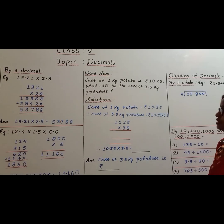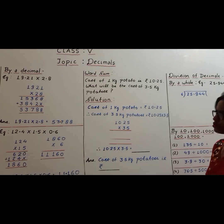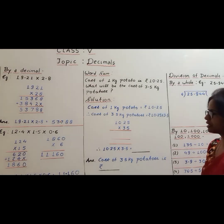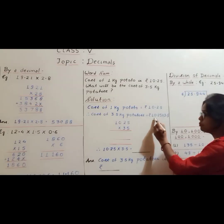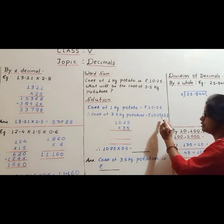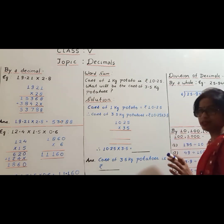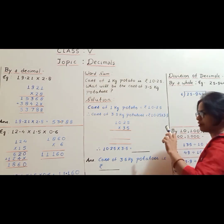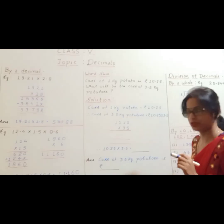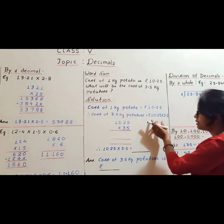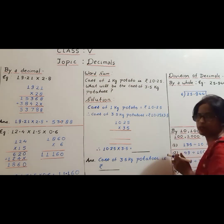Cost of 1 kg of potato is equal to ₹10.25. Therefore, cost of 3.5 kg of potatoes is equal to ₹10.25 into 3.5. The method is the same — we have to multiply both numbers without the decimal point. Without decimal point, it will be 1025 and 35.